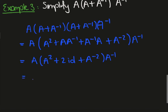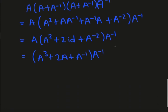If I expand out the A, I get A cubed plus 2A plus A to the minus 1. And if I expand on the right, I get A squared plus 2 times the identity plus A to the minus 2, A plus A to the minus 2. And that's it.